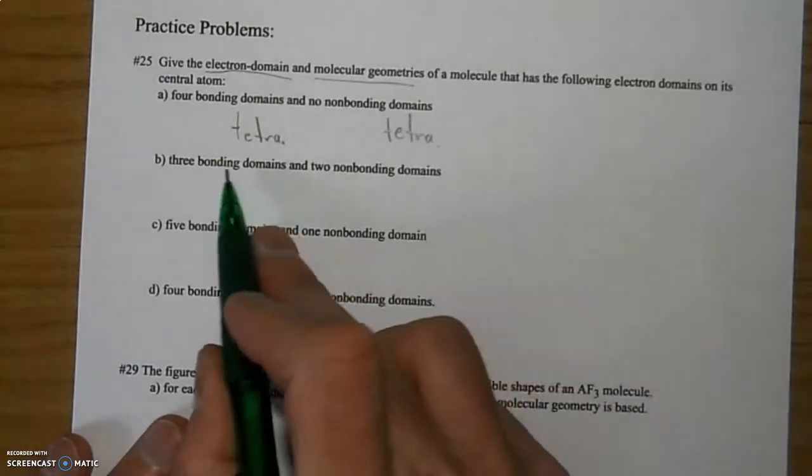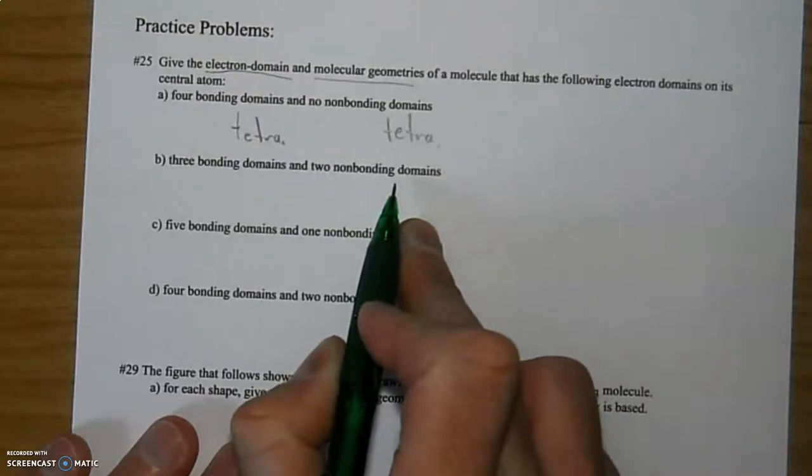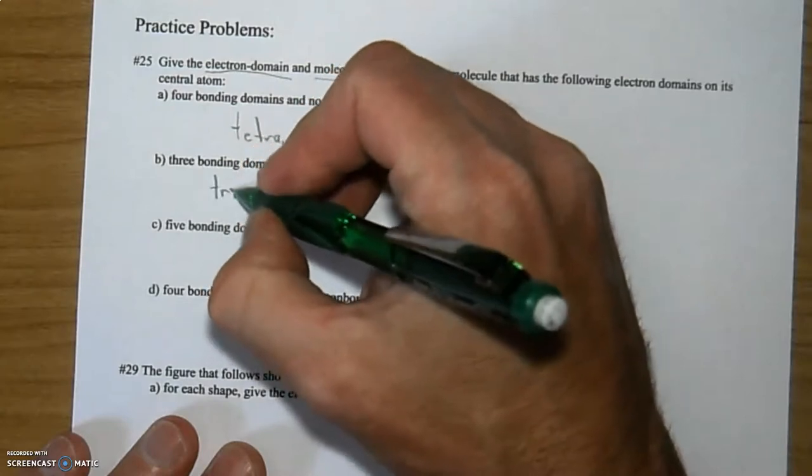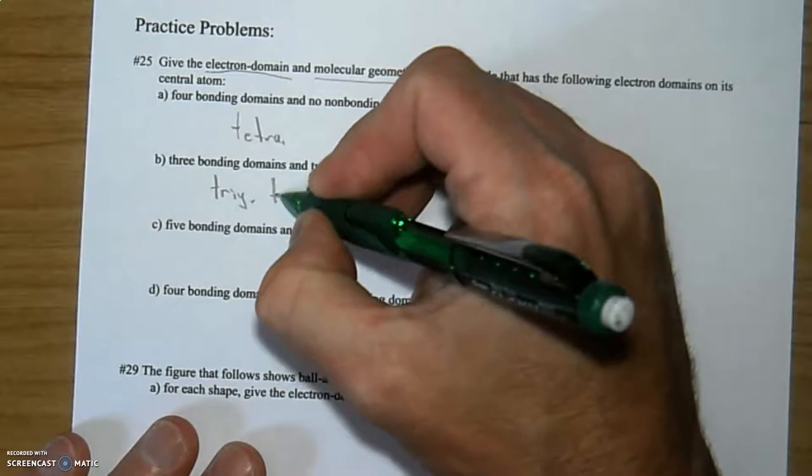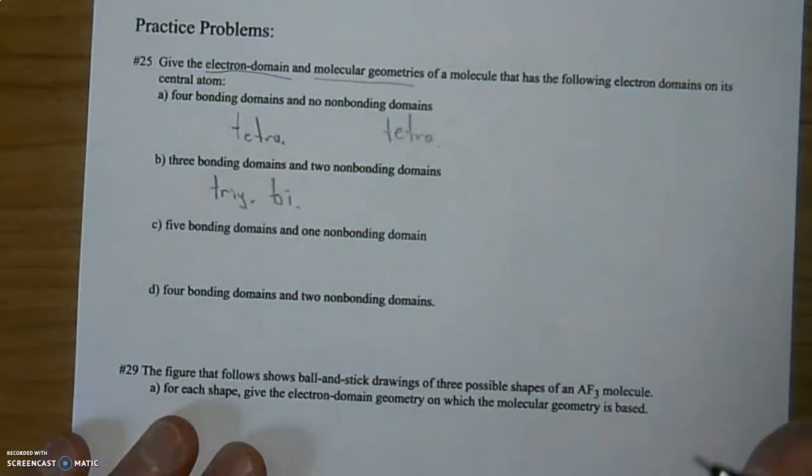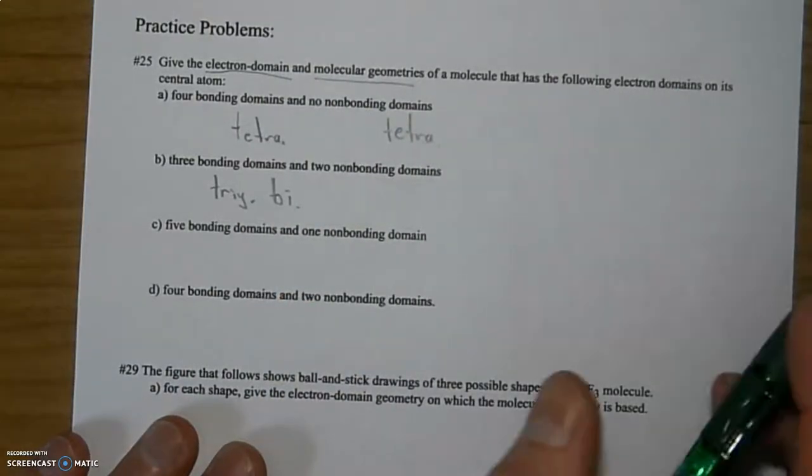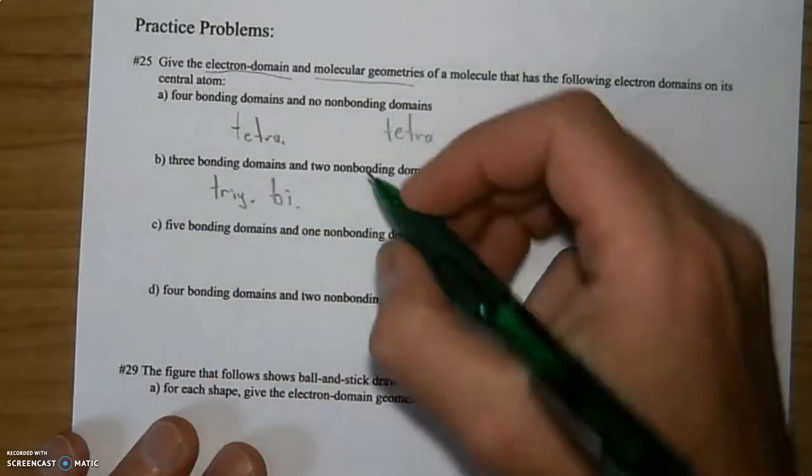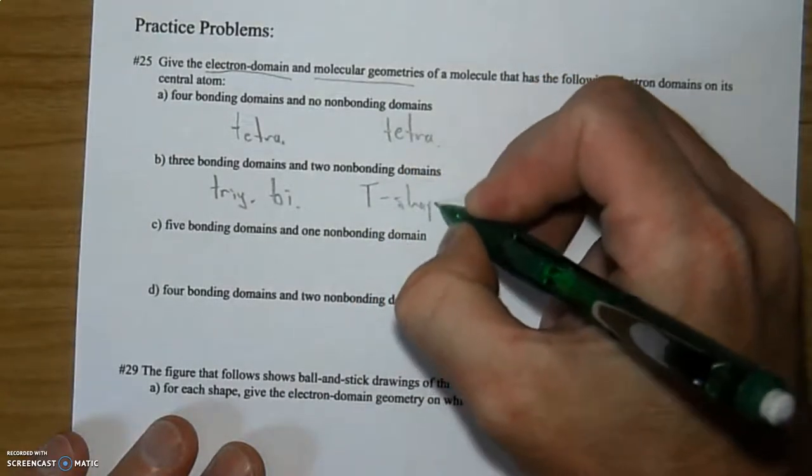Let's do b. You have three bonding domains and two non-bonding domains. So five total. If I take a look on my list, if I have five total, it would be trigonal bipyramidal for the electron domain geometry, but specifically the molecular shape that I see, having three bonded and two non-bonding, that will be t-shaped.